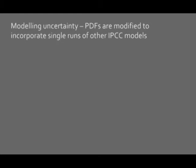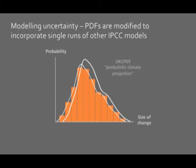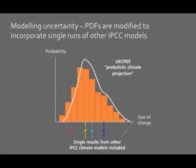So the results of these single runs are incorporated into the results of the UKCP09 modeling process, and we can see that some of these results increase the overall range for UKCP09. Incorporating the results of these other models has the effect of modifying the shape of the PDF. In this example the upper end of the curve is extended by the incorporation of these results. It's the final curve that gives us the probabilistic climate projections that form the basis of much of UKCP09, and it's this data that you can access online through the user interface, used to create all the maps, graphs and charts that you can see online.